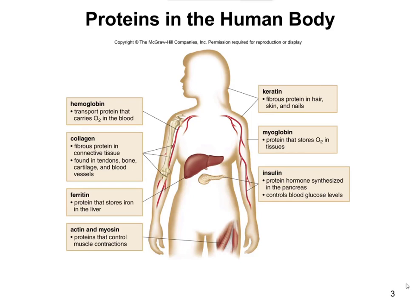Some examples of proteins in our body include hemoglobin and myoglobin, as well as keratin and collagen. Hemoglobin carries oxygen, myoglobin stores oxygen, and actin and myosin are involved in regulating muscle contractions. Insulin is a protein hormone — a smaller peptide — that is involved in controlling blood sugar levels. All of these are different types of proteins important to human function.